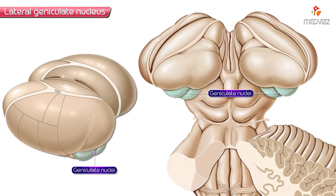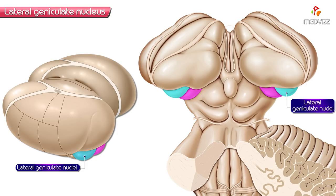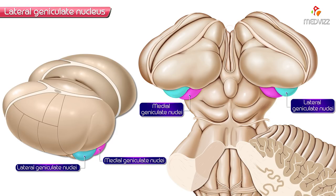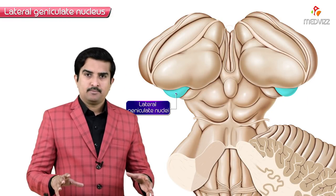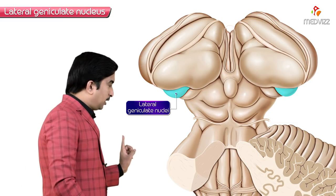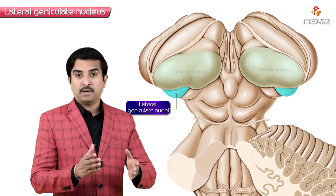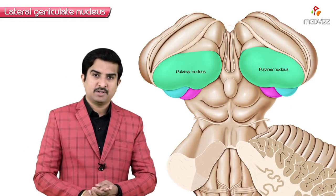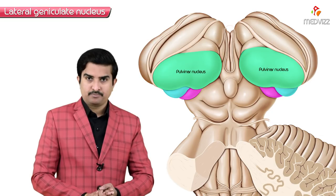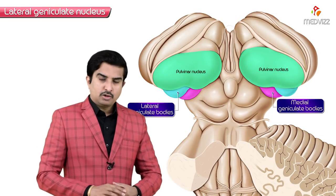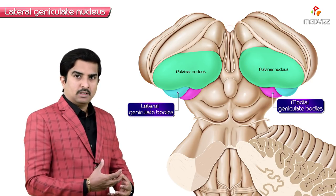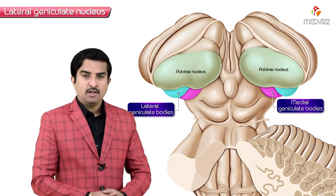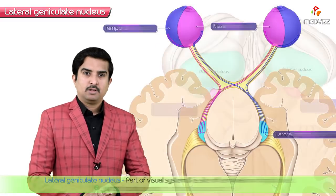The geniculate nuclei are two in number: the lateral geniculate nuclei and the medial geniculate nuclei. The lateral geniculate nuclei are located near the posterior pole of the thalamus, ventral to the pulvinar nucleus, where they form small eminences on the surface of the thalamus referred to as geniculate bodies, because these nuclei create an outpouching at the posterior pole of the thalamus.